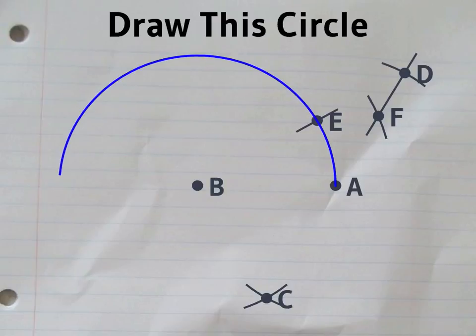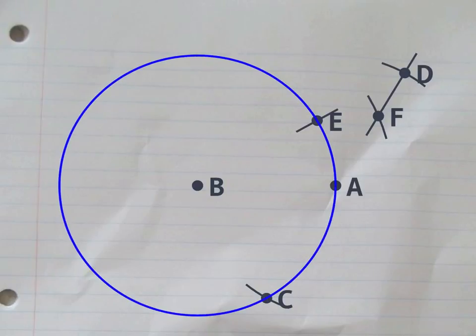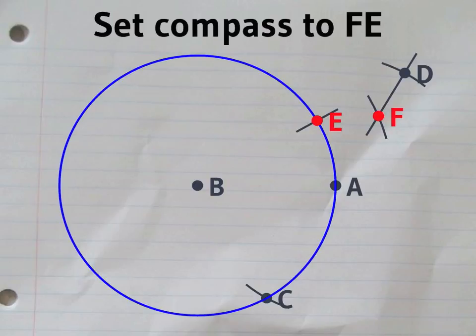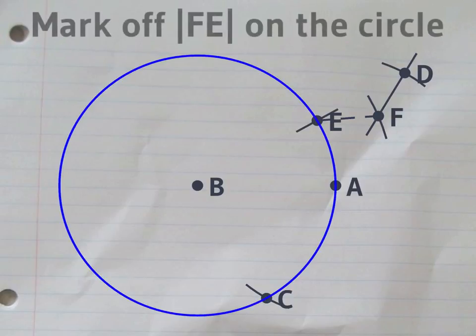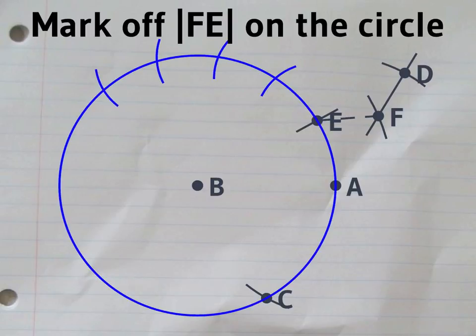We're nearly done, redraw this circle centered on B. The distance between E and F is almost exactly the length of the edge of a regular 14-sided polygon.